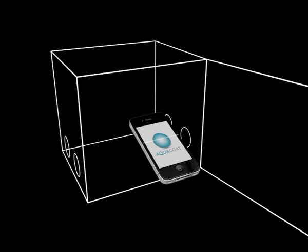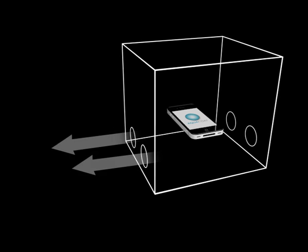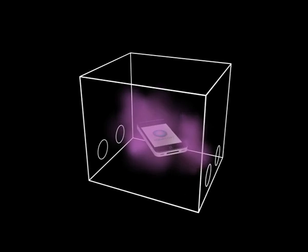The AquaCoat process begins by placing the device inside the chamber of the AquaCoat machine. The machine then pumps down to create a vacuum. Once the pressure has been reduced,